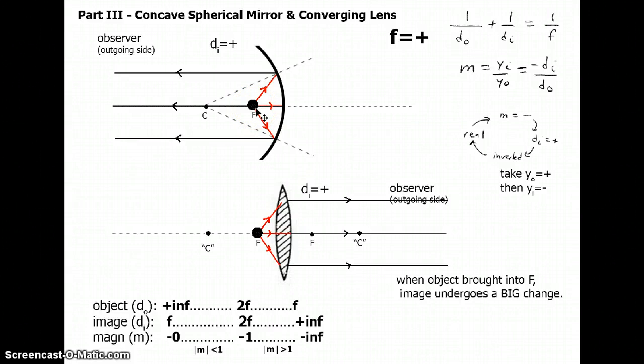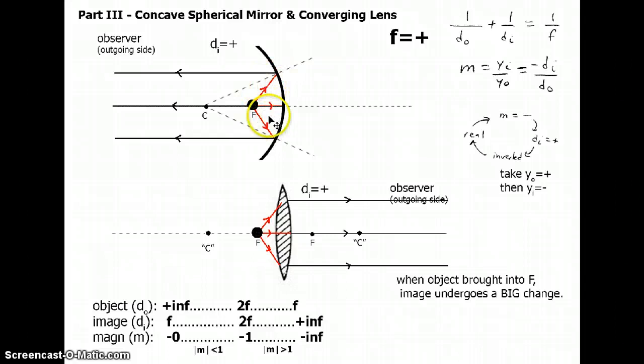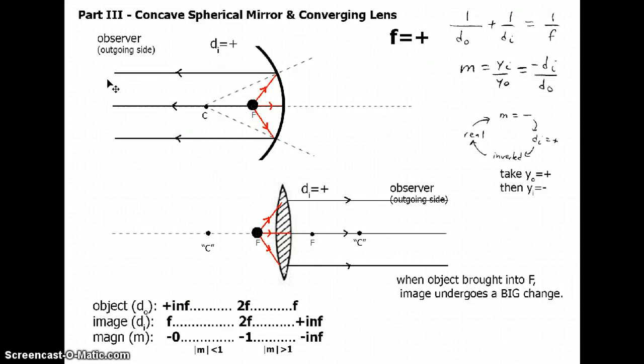You might think this is the end of the line — are we going to be able to do anything else? At this point, the light coming off the object is so divergent that we can't channel it in anymore. The best we can do is for this very divergent light to go out parallel rather than continuing to diverge. You bring the object closer and closer, more and more divergent light comes off it, and at some point you break the mirror's ability to channel it. So we have that the light doesn't get channeled into a real image — it just goes out parallel. Let's find out what happens when we bring the object inside the focus.